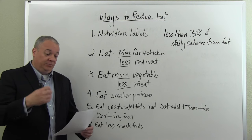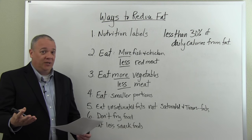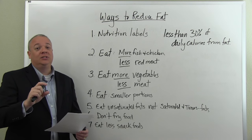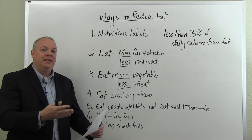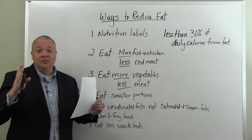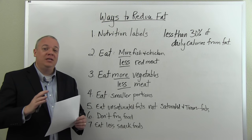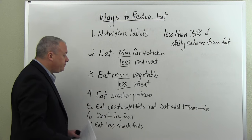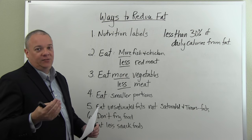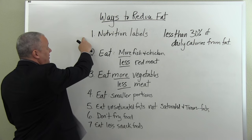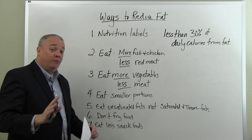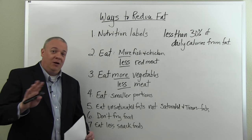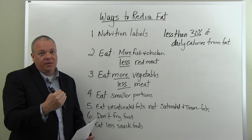Number four: encourage them to eat smaller portions. If someone wants to eat something they really like that has high fat content, that's okay — just eat less. You don't have to fill up on it. Eating smaller portions reduces calories overall and certainly reduces calories from fat. Number five: when given the choice between saturated fats, trans fats, and unsaturated fats, always choose unsaturated fats. Trans fats are the worst — stay away from them altogether if possible. Keep saturated fats to a minimum.